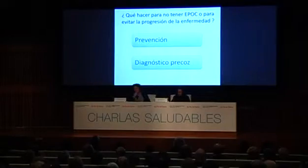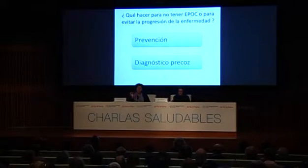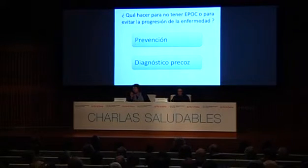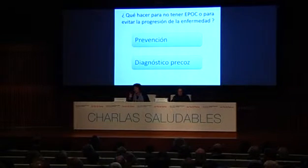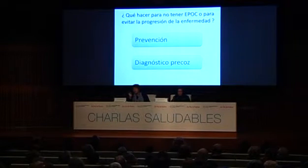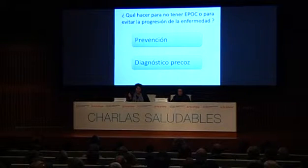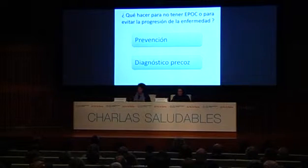What can be done to avoid COPD or prevent disease progression? First, as I mentioned, prevention. Primary prevention means caring for the lung practically from birth — not smoking, not exposing oneself to toxic substances, but fundamentally not smoking. The other prevention we are currently campaigning hard for is early diagnosis. The earlier the disease is diagnosed, the better things will go for everyone.